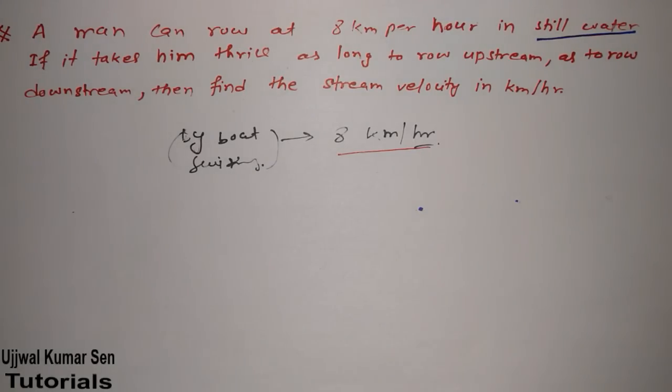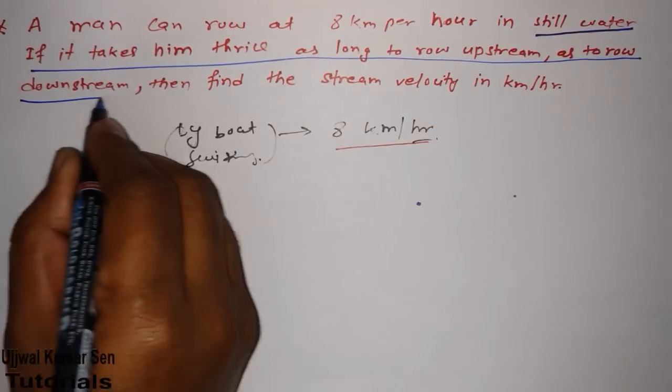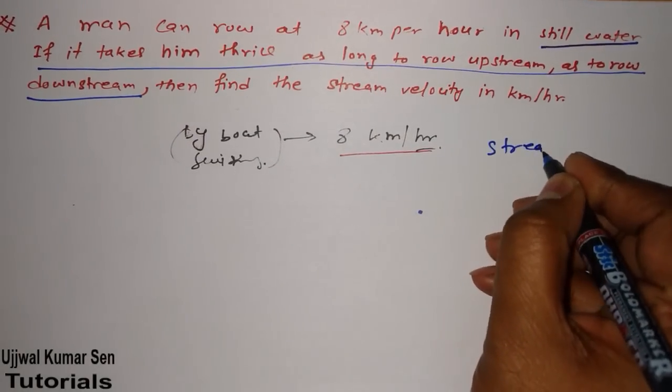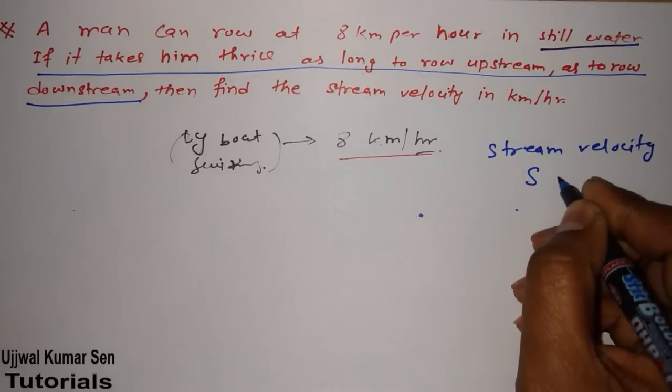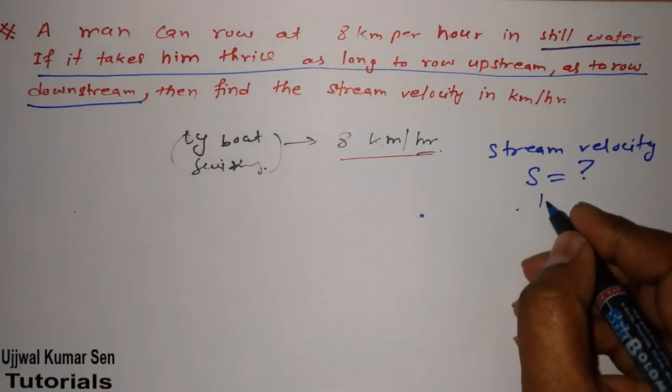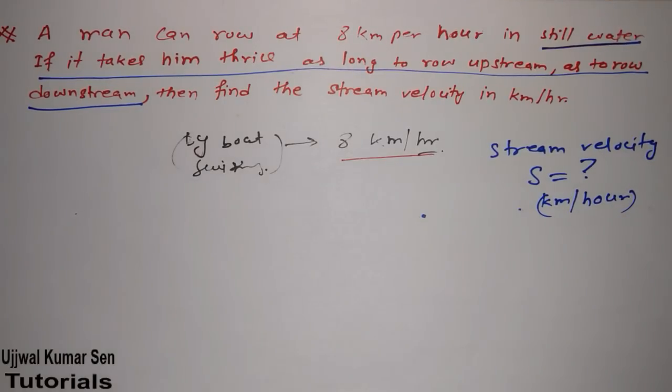If it takes him thrice as long as to row upstream, as to row downstream. So, this line is the key to solve the problem. Then, find out stream velocity. We have to find out stream velocity. Or, in short, we have to find velocity of the stream. And unit must be notable. That is, km per hour.